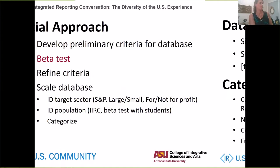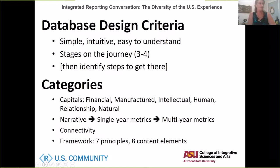The design criteria we used for the database aimed to be simple, intuitive, and easy to understand. We mapped out where organizations were on the journey, using a rating of one to four. A one means they're not doing anything towards integrated reporting; a four means they're using complete integrated reporting according to the IIRC framework, including connectivity, materiality — and hopefully giving companies ideas of how to move from one to four.